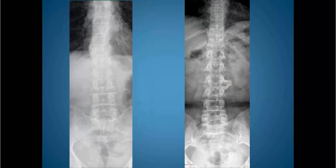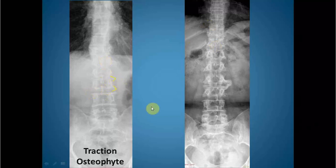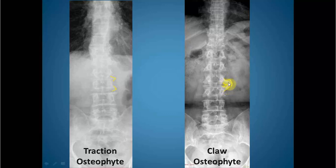Osteophytes are of two types. Initially there is a traction osteophyte, which is perpendicular to the long axis of the spine. When the traction osteophyte increases in size, it takes a turn and forms a claw osteophyte, which may articulate with another claw osteophyte from the adjacent vertebral body.